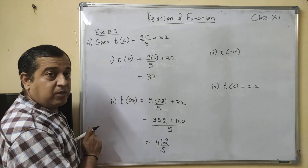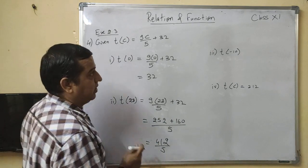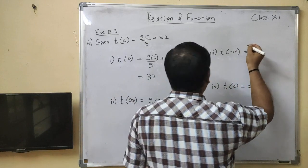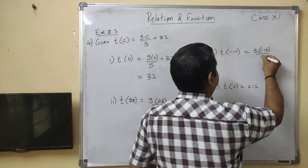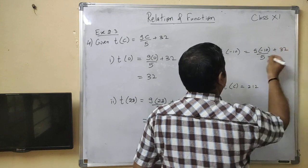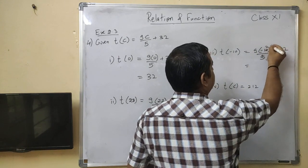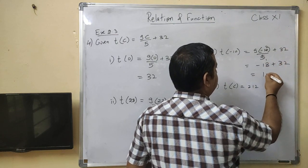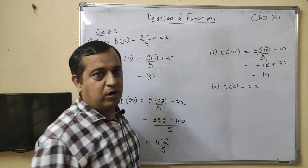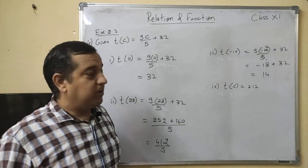Do the addition, you get 412 upon 5. Means when in degree Celsius it is 28 degree Celsius, then in Fahrenheit it will be 412 by 5.